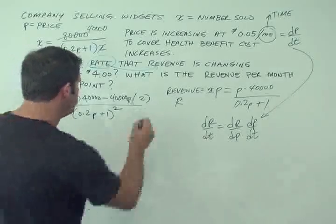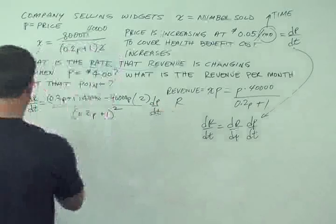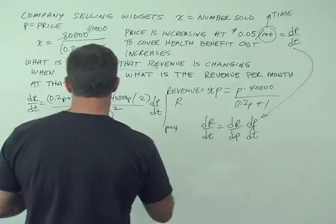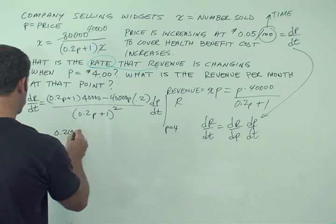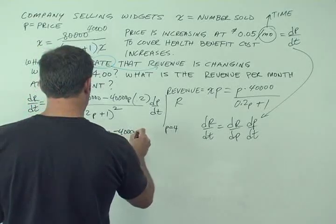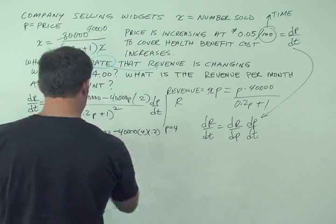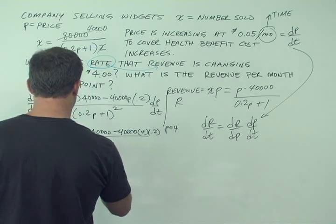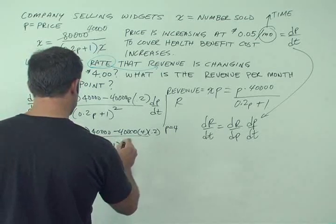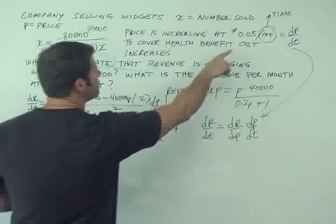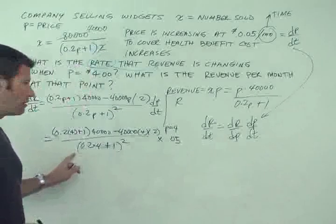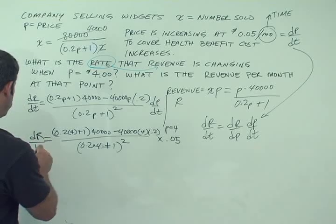Now we have to, that's dr dp times dp dt. And so then, and we can evaluate this when p equals $4. So we have 0.2 times 4 plus 1 times 40,000 minus 40,000 times 4 times 0.2 divided by 0.2 times 4 plus 1 squared times dp dt, which is 0.05. Now I'd have to get out a calculator, which I don't have handy. So you can crunch this number out as well as I can. But this is the answer for dr dt.